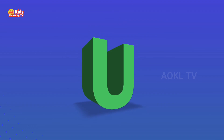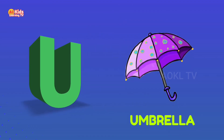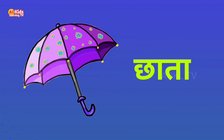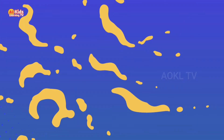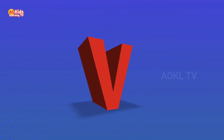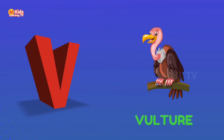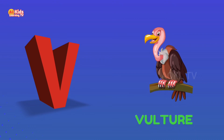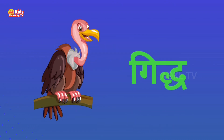U. U for Umbrella. Umbrella means chata. V. V for Vulture. Vulture means gidh.